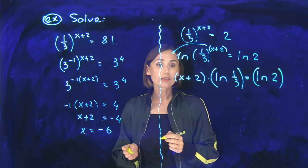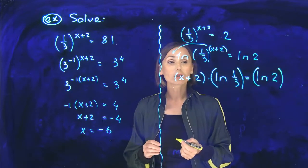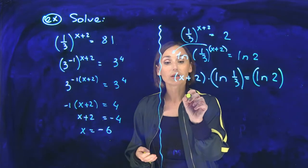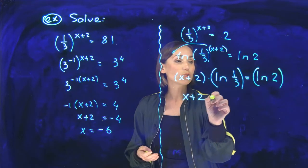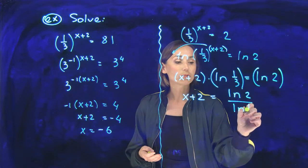Now, the easy thing that you can do before you open parentheses and distribute here: you better divide by ln of one-third. So x plus 2 will be ln of 2 over ln of one-third.